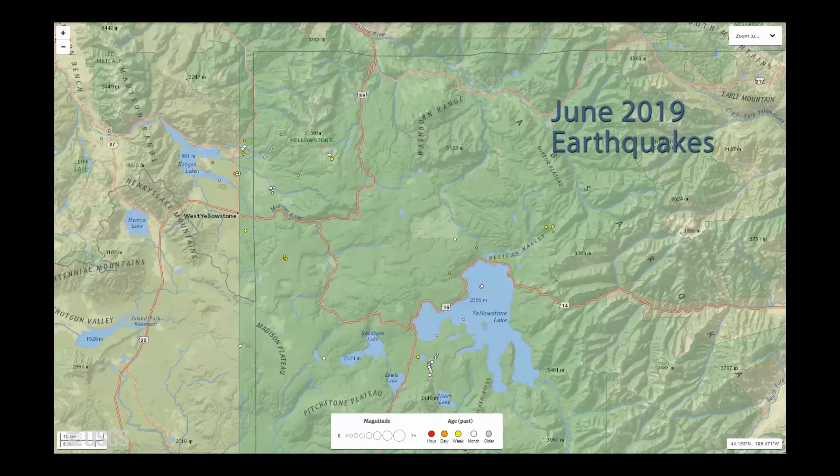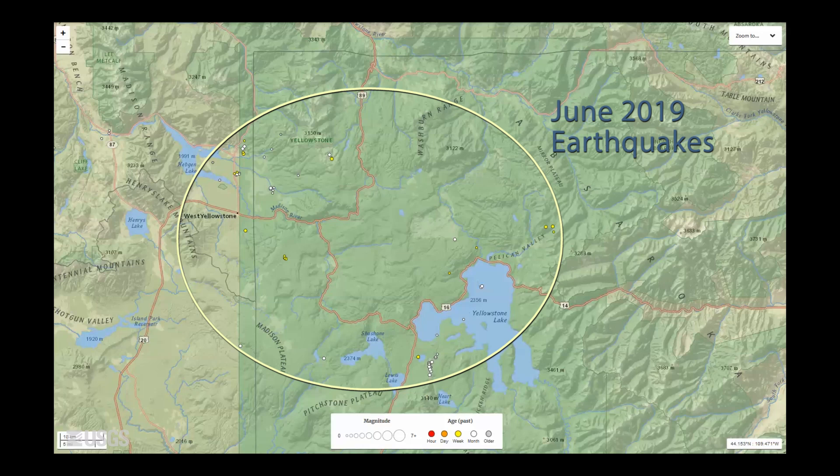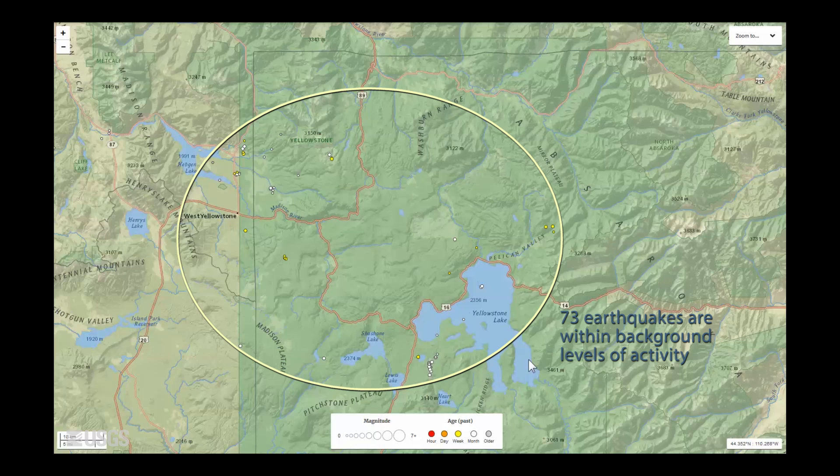Alright, so let's check out the data. During the month of June, the University of Utah Seismograph Stations, which is responsible for the operation and maintenance of the Yellowstone Seismic Network, located only 73 earthquakes in the Yellowstone area. You can see they were widely distributed across the region.